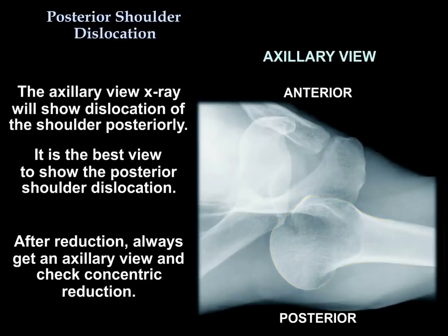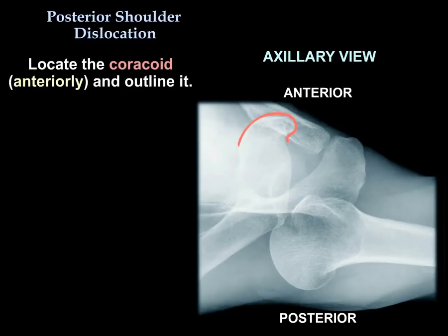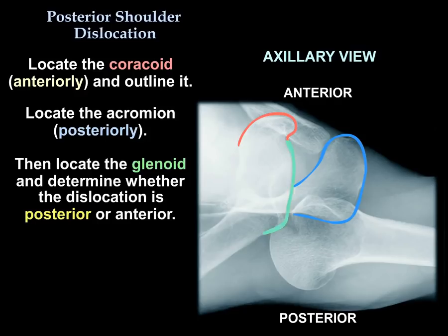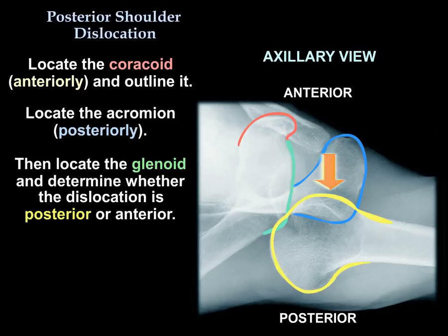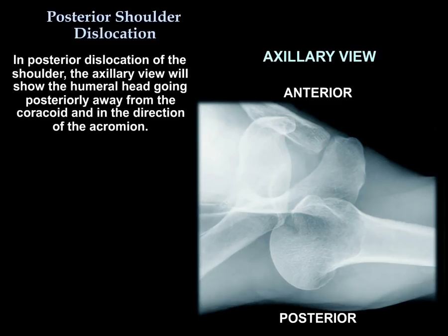The axillary view is the best view to show posterior shoulder dislocation. After reduction, always get that view and check for concentric reduction. In the axillary view, locate the coracoid and outline it — the coracoid is anteriorly. Then look for the acromion, which is posteriorly. Locate the glenoid and see where the head is going: is it going posteriorly? It will be a posterior dislocation. Is it going anteriorly? It will be an anterior dislocation. In posterior dislocation, the head will be going posteriorly, away from the coracoid and in the direction of the acromion.